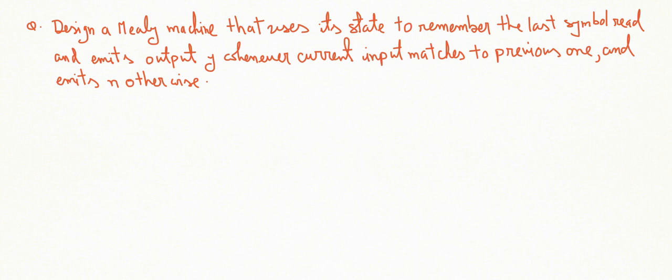Suppose we are working on input alphabet {0, 1}. Then if the input sequence is like this: 0, 0, then this last input symbol matches with the current input symbol, so output will be Y.